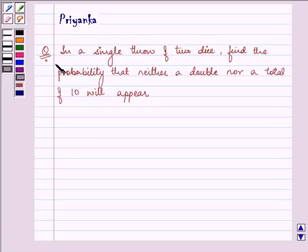Hello and how are you all today? The question says, in a single throw of two dice, find the probability that neither a double nor a total of 10 will appear.